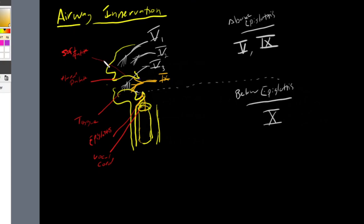To quickly summarize, airway innervation above the epiglottis involves cranial nerve 5 and cranial nerve 9. The anterior nasopharynx is supplied by the ophthalmic branch (V1), the posterior nasopharynx by the maxillary branch (V2), and the anterior two-thirds of the tongue by the mandibular branch (V3) of the trigeminal nerve. The glossopharyngeal nerve, cranial nerve 9, supplies the posterior third of the tongue, the tonsils, the pharynx, and the back of the soft palate. In the next video, we'll cover innervation below the epiglottis.